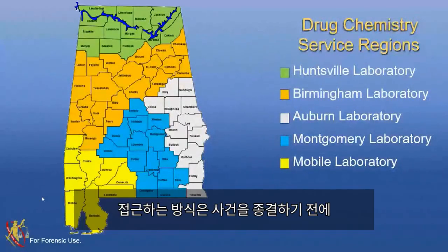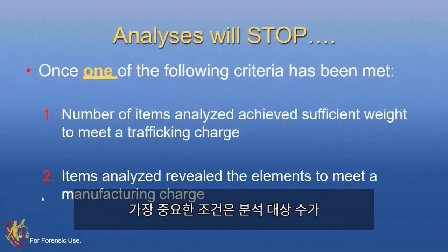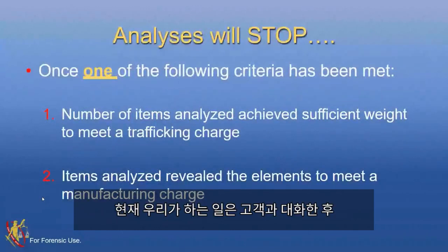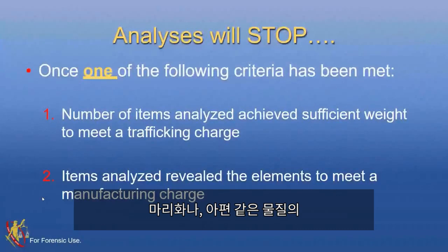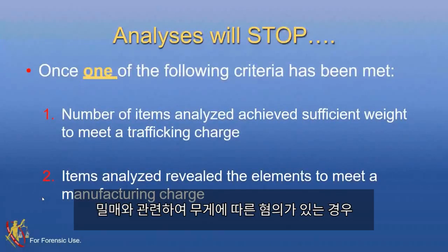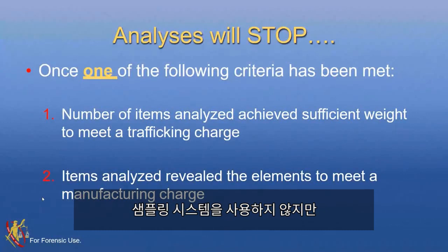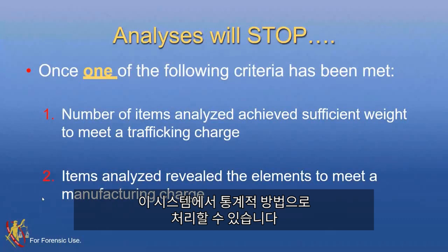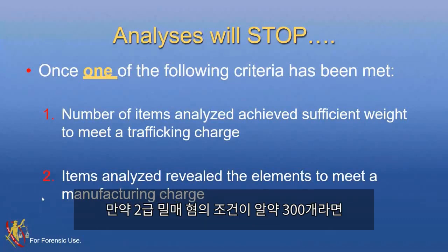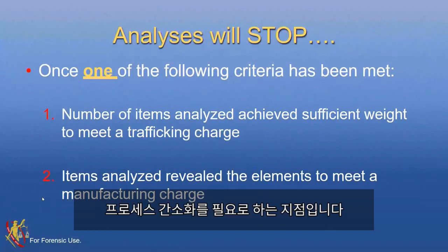The way we approach our controlled substance analysis is we have to meet one of the following criteria before we stop working a case. First, the number of items analyzed achieves sufficient weight to meet a trafficking charge. We don't weigh our evidence unless it is open for a trafficking charge — that includes marijuana, opiates, and others. If there's an intent to distribute, trafficking, or similar charge, we will weigh it and analyze every single item that meets that weight — we don't use a statistical sampling approach.